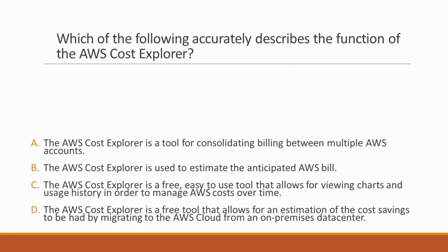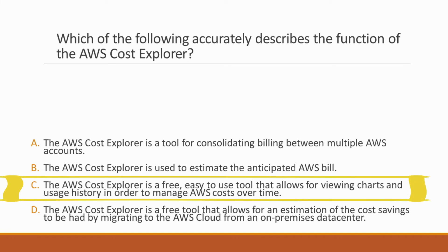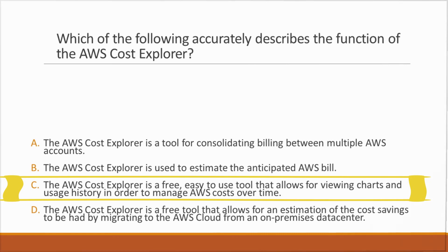Next question: Which of the following accurately describes the function of the AWS Cost Explorer? Options: A. A tool for consolidating billing between multiple accounts, B. Used to estimate the anticipated AWS bill, C. A free, easy-to-use tool for viewing charts and usage history to manage AWS costs over time, D. A free tool to estimate cost savings from migrating to AWS. Correct answer is option C, because the AWS Cost Explorer is an easy-to-use interface that lets you visualize, understand, and manage your AWS costs and usage over time.